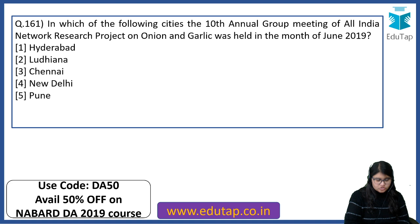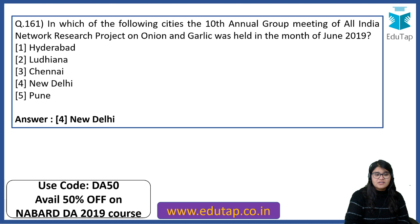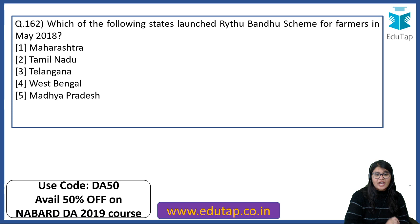In which city was the 10th Annual Group Meeting of the All India Network Research Project on Onion and Garlic held in June 2019? The correct answer is New Delhi. Which of the following states launched the Raitu Bandhu scheme for farmers in May 2018? This is important — the answer is Telangana. Raitu Bandhu is a very famous scheme.